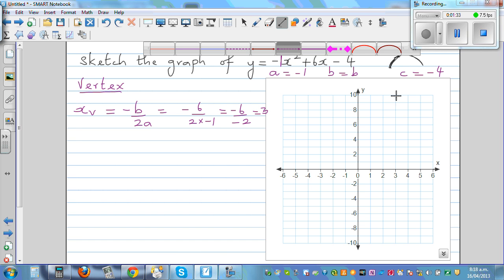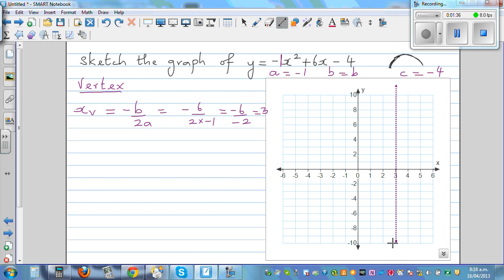Now we need to find the y intercept, sorry, the y coordinates of yv would be by putting this back in this equation. So this is negative times 3 squared plus 6 times 3 minus 4.